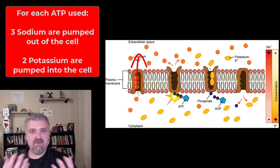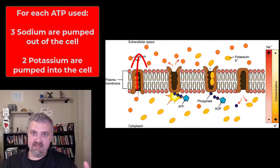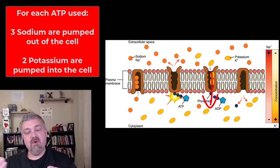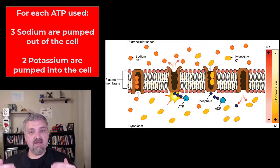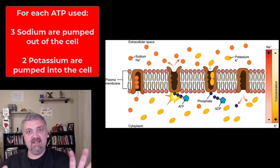Three sodiums are going to be pumped outside of your cells where there's already a lot of sodium, and two potassiums are going to be pulled into your cells where there's already a lot of potassium. So they're moving against their concentration gradients from low to high concentration. You're forcing these things uphill, which is why they require energy.